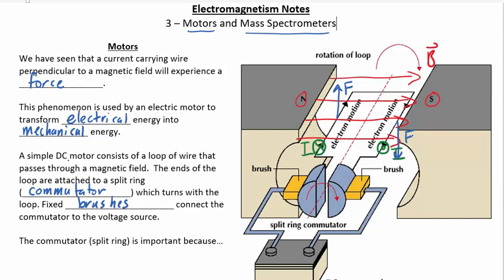Now, overall, what's the result? If this side of the loop is being pulled upwards, and this side of the loop is being pulled downwards, then overall, this is going to rotate. It's going to rotate in this direction.